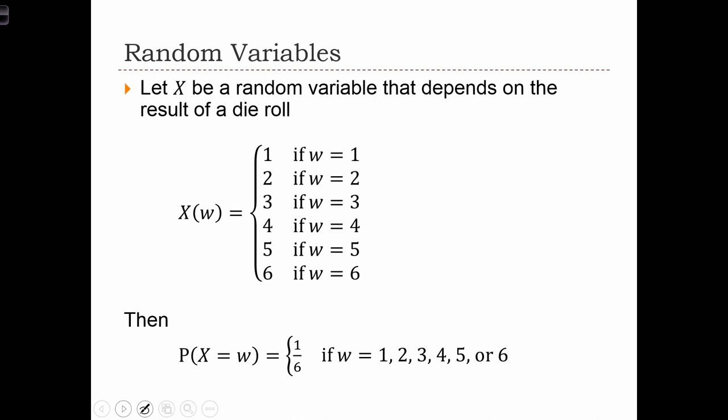Let X be a random variable that depends on the result of a die roll. Here, the result of the roll is going to be kept track of with W. So if the roll is 1, X is equal to 1. If the roll is 2, X is equal to 2. Then, the probability that X equals W for any of these W's, 1 through 6, is just simply 1/6. There's a 1/6 chance that X will equal 1, a 1/6 chance that X will equal 2, and so on.